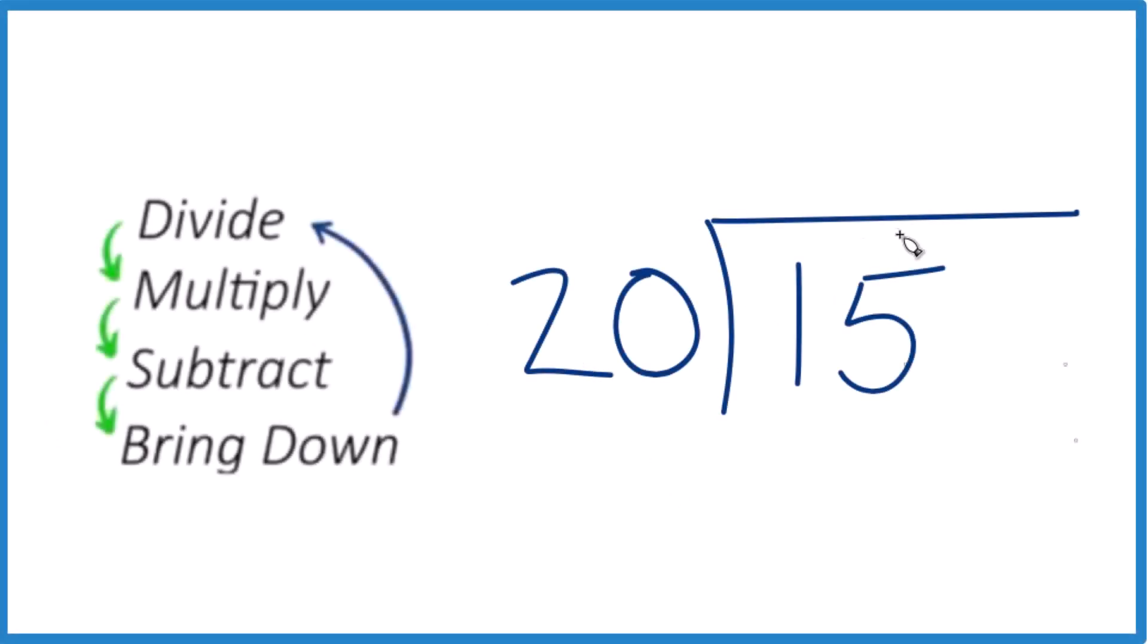So here's how you figure out 15 divided by 20. We're going to use long division. So when we look at 20, 20 doesn't go into 15, so we can't divide 15 by 20. We need another decimal point out here. So let's call this 150, and we'll put a decimal point up here. So now we can think about this as 150 divided by 20.